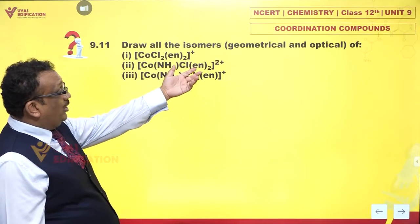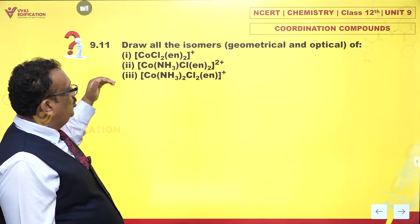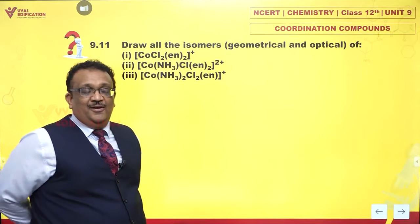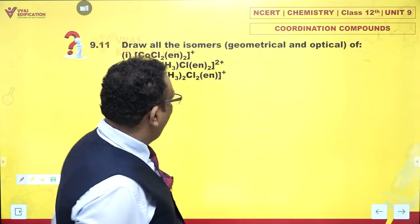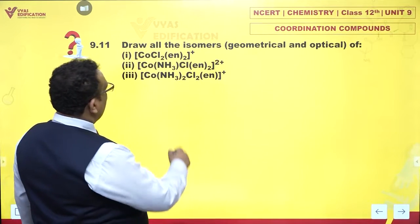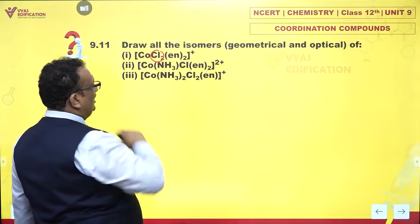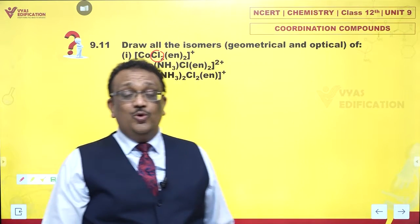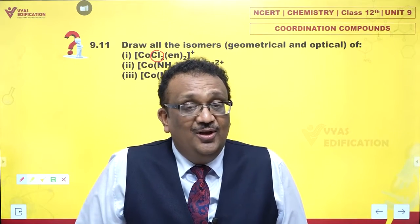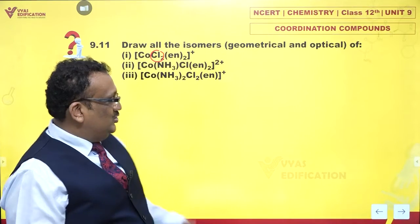Draw all the isomers, geometrical and optical, of parts 1, 2, and 3. We have to draw all geometrical and optical isomers. Let's begin with question number one: [CoCl2(en)2]^2+. If you have two monodentate ligands, these two monodentate ligands could be cis or trans to each other.